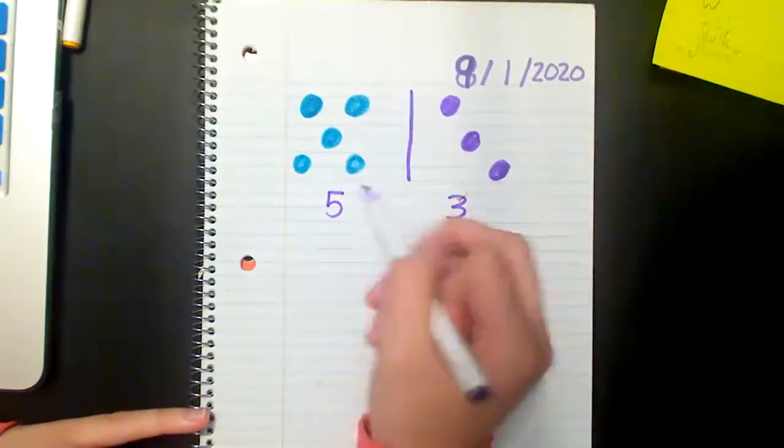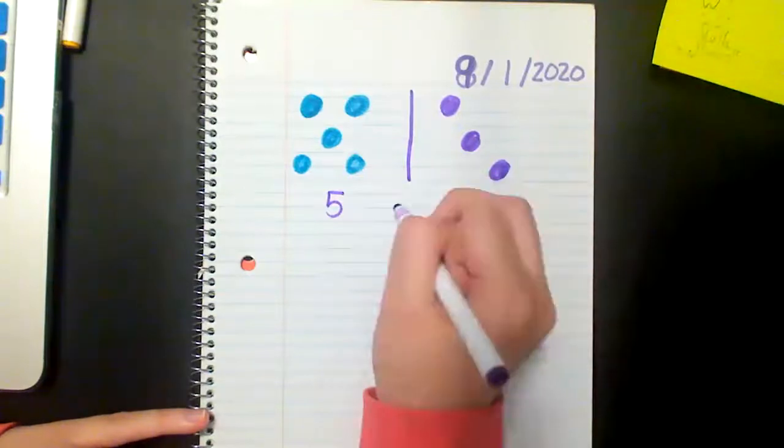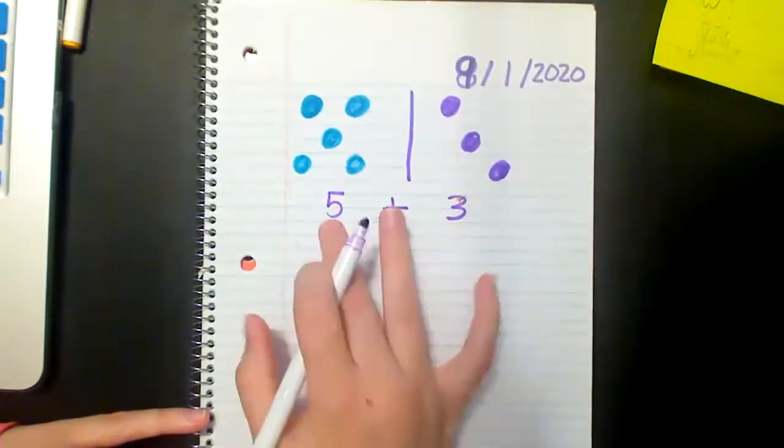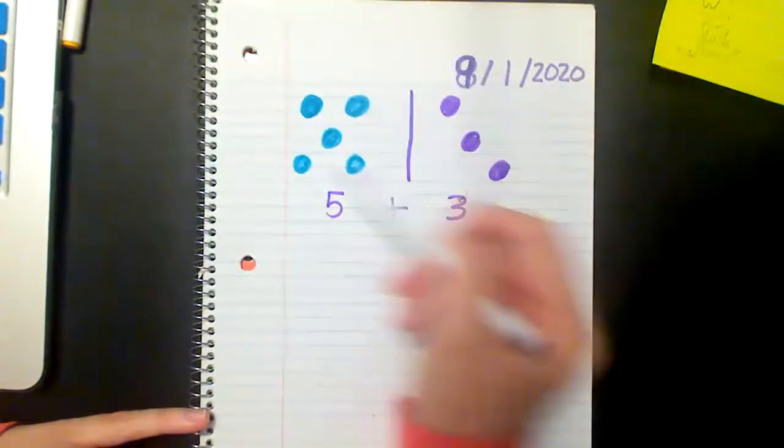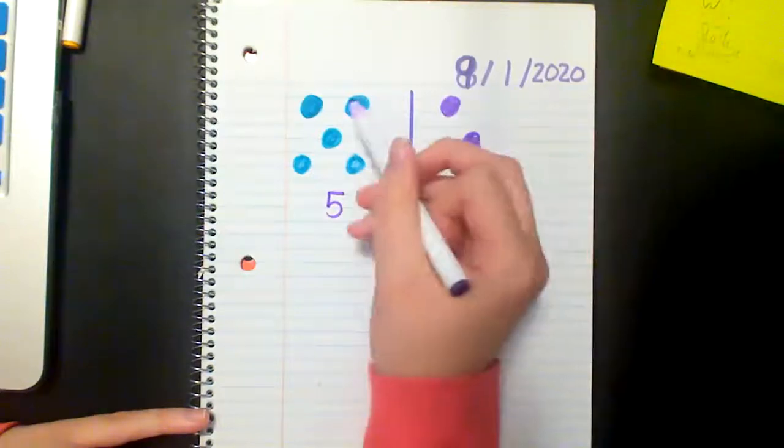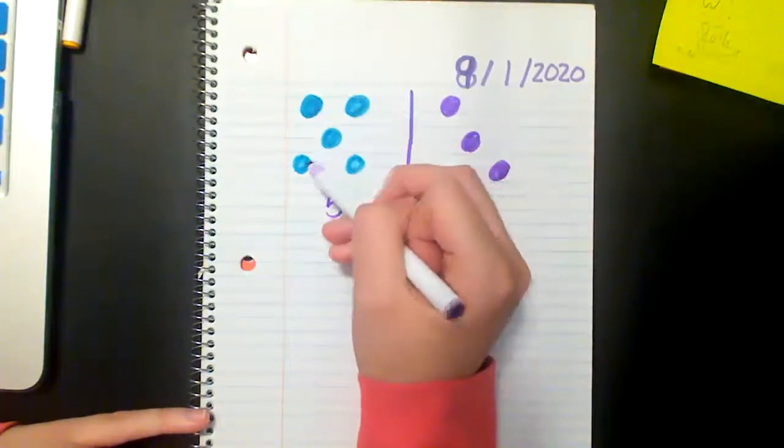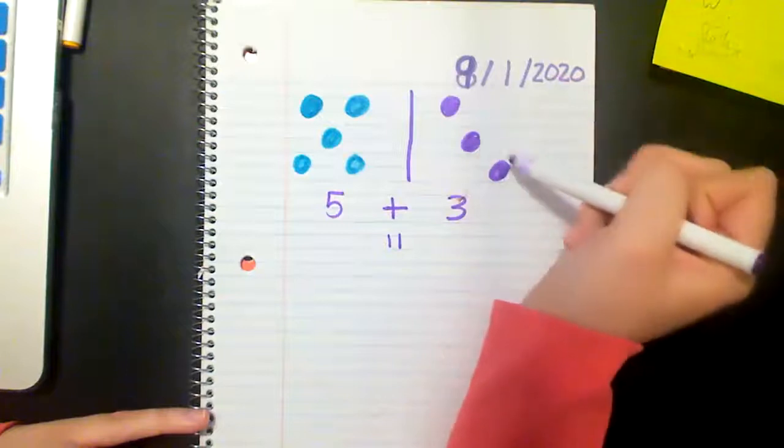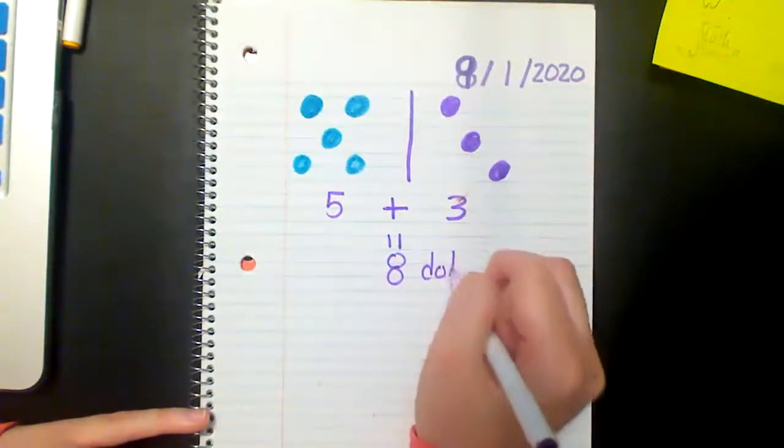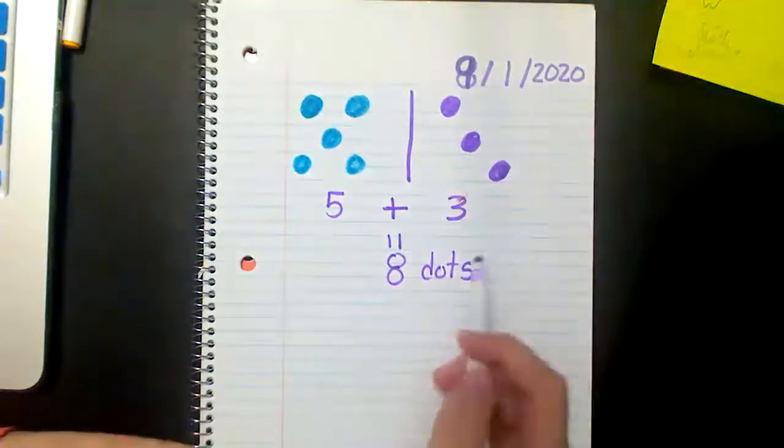Okay now after I have counted both sides of dots I'm going to combine them or add them together. So five and then I'm going to count them all together and get a new total number down here. So five, one, two, three, four, five, six, seven, eight. So I have eight dots in total. Eight dots in all.